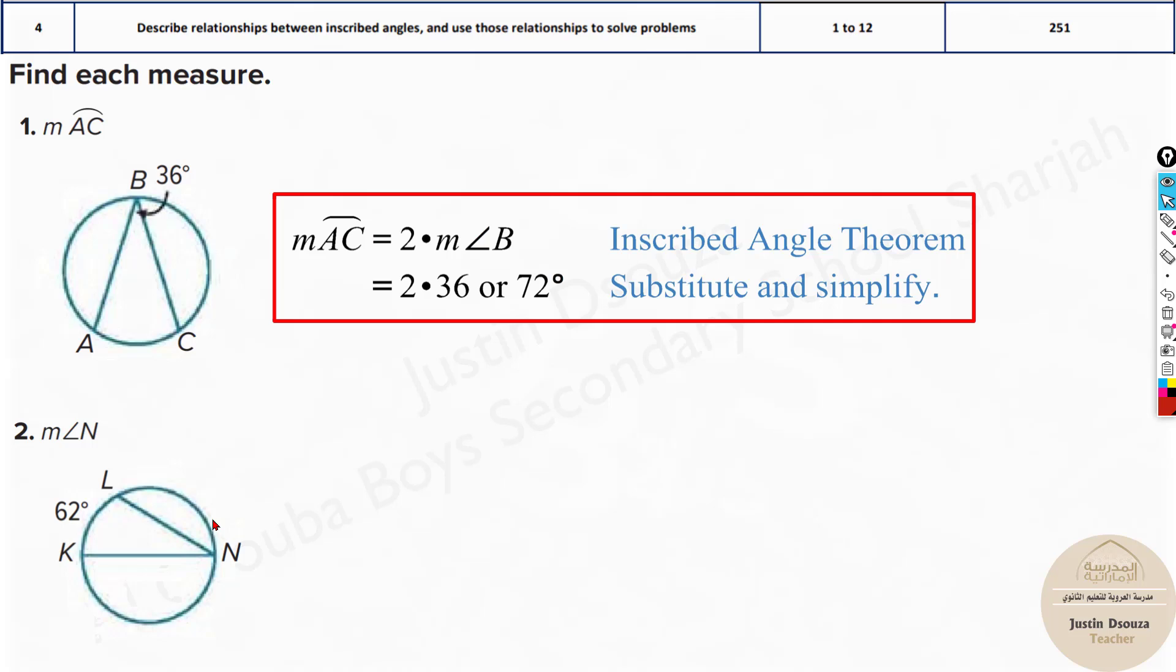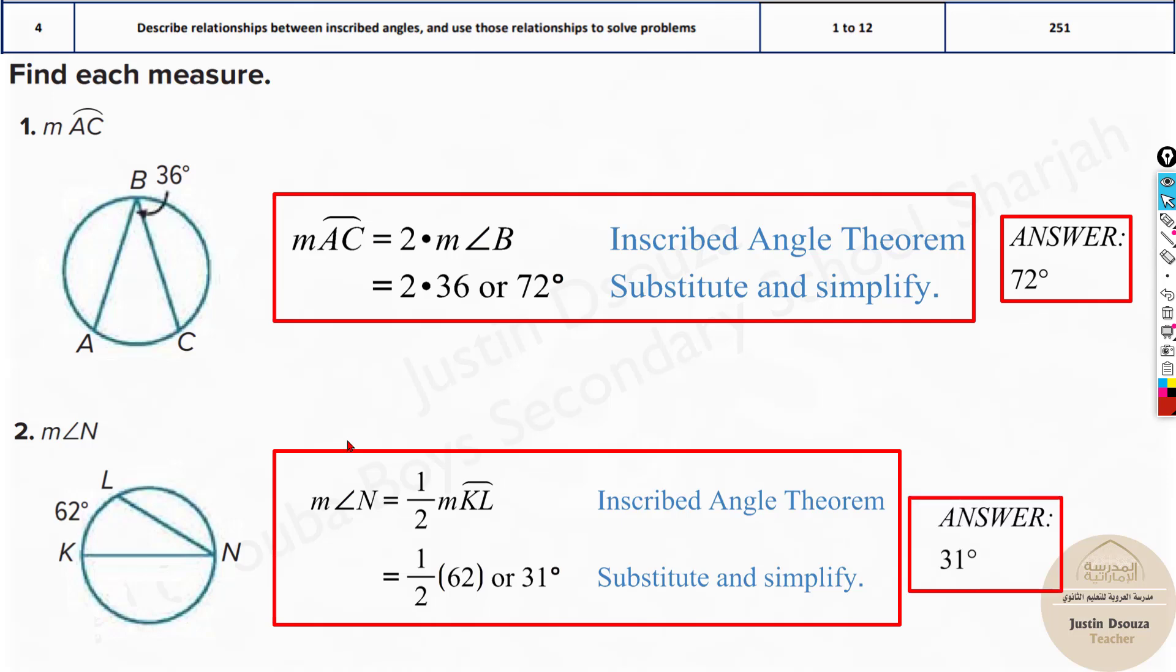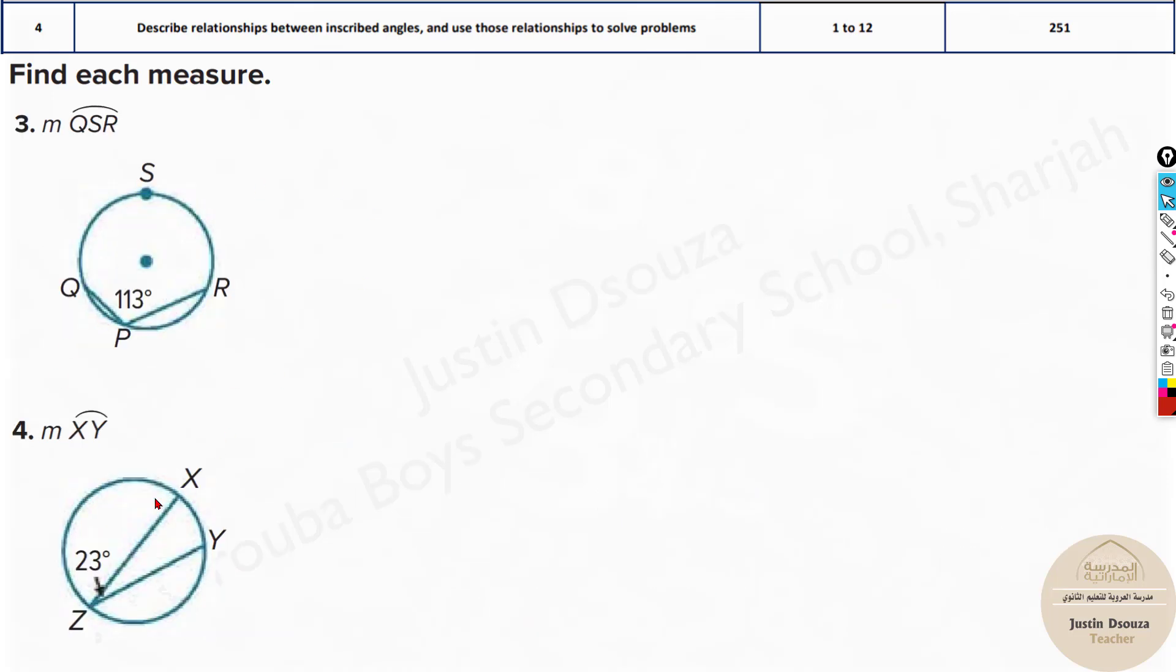Here they have asked to measure angle N. We have this arc. So the inscribed angle will be half of this arc. So it's 62 divided by 2, 31 would be the answer. Very straightforward problems. Please solve them by yourselves.